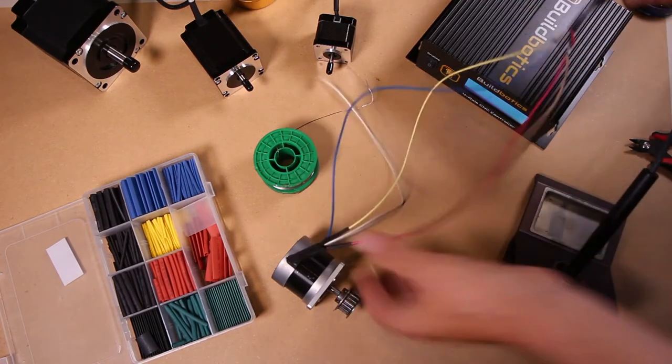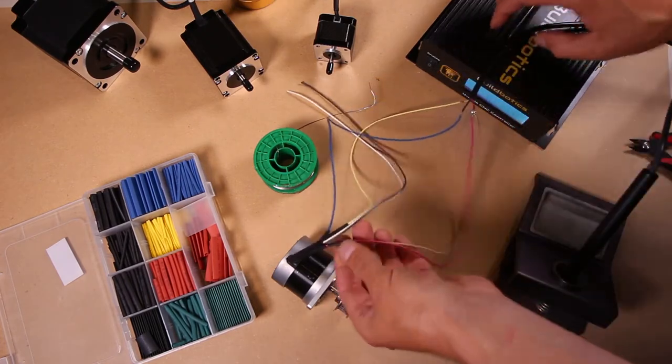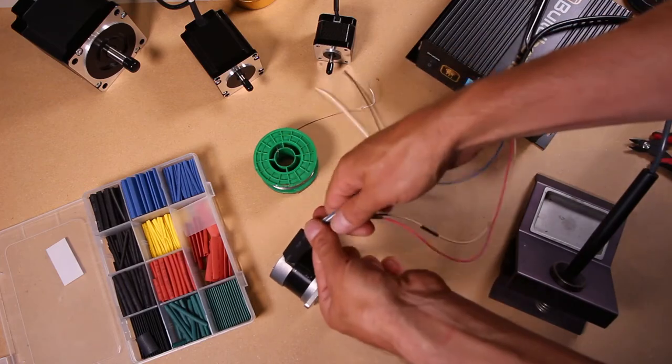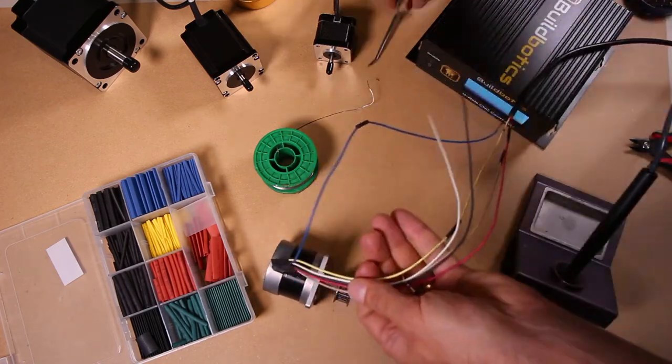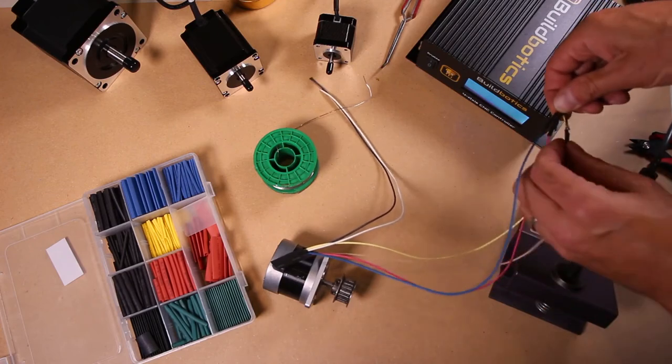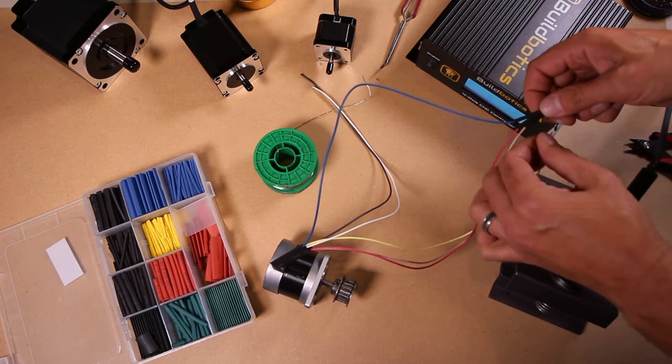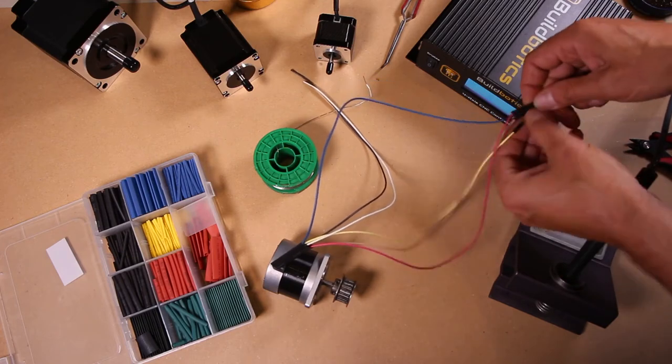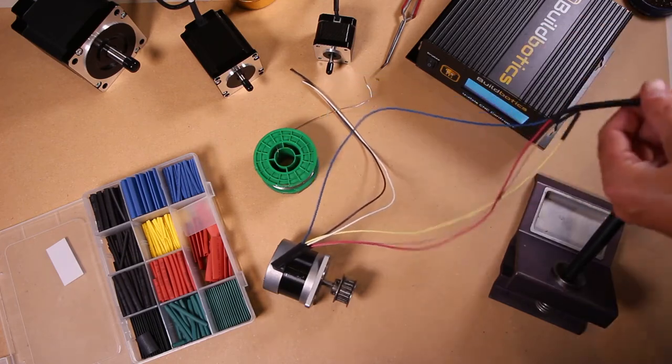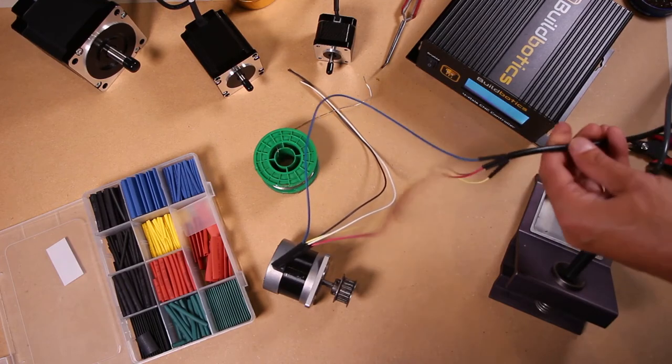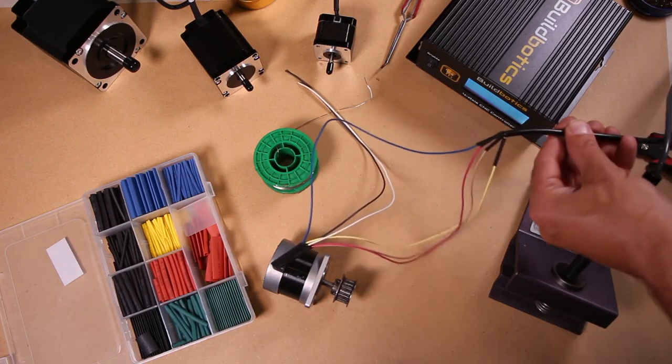Now that all the connections have been made, I'll bring in the small pieces of heat shrink tubing and slip them over. Now it's best to use a hot air tool or a heat gun to shrink the tubing, but in a pinch you can also use a lighter.